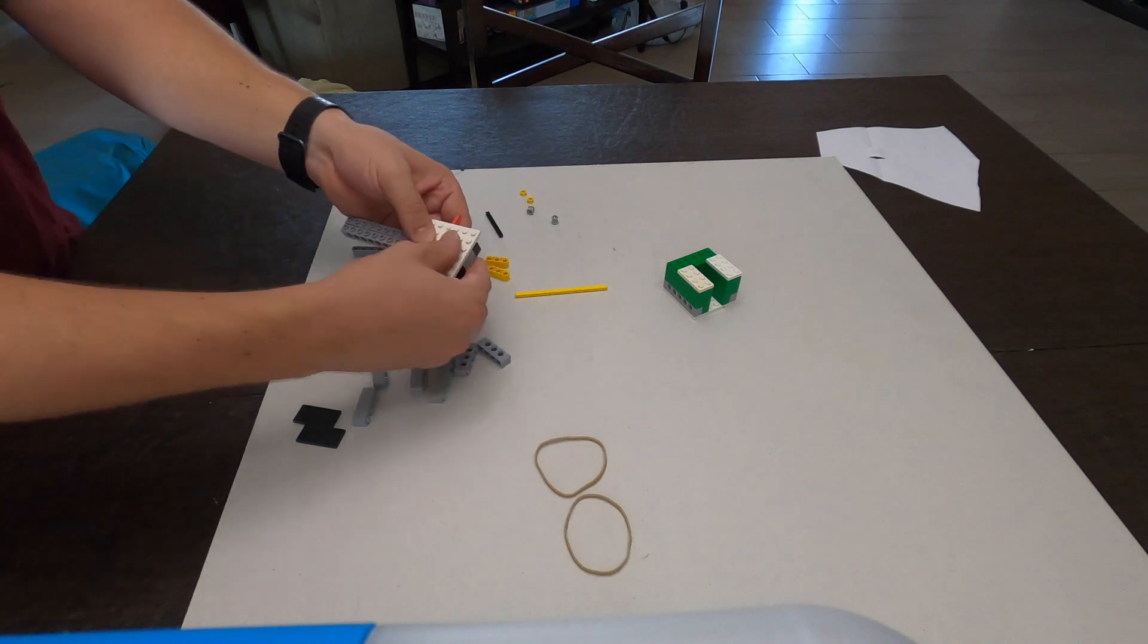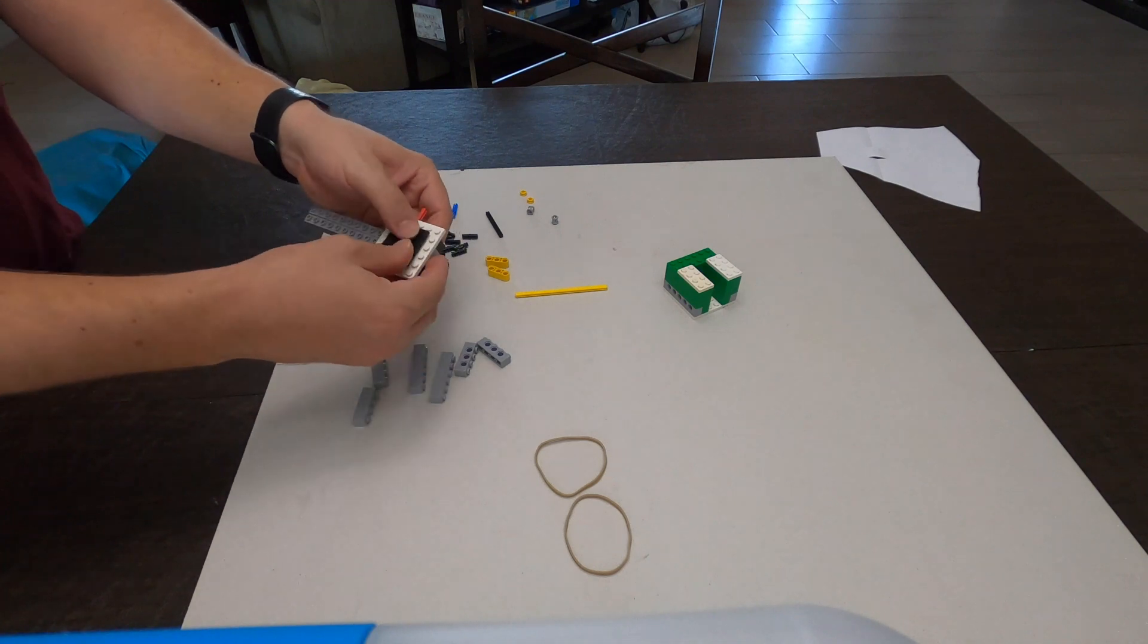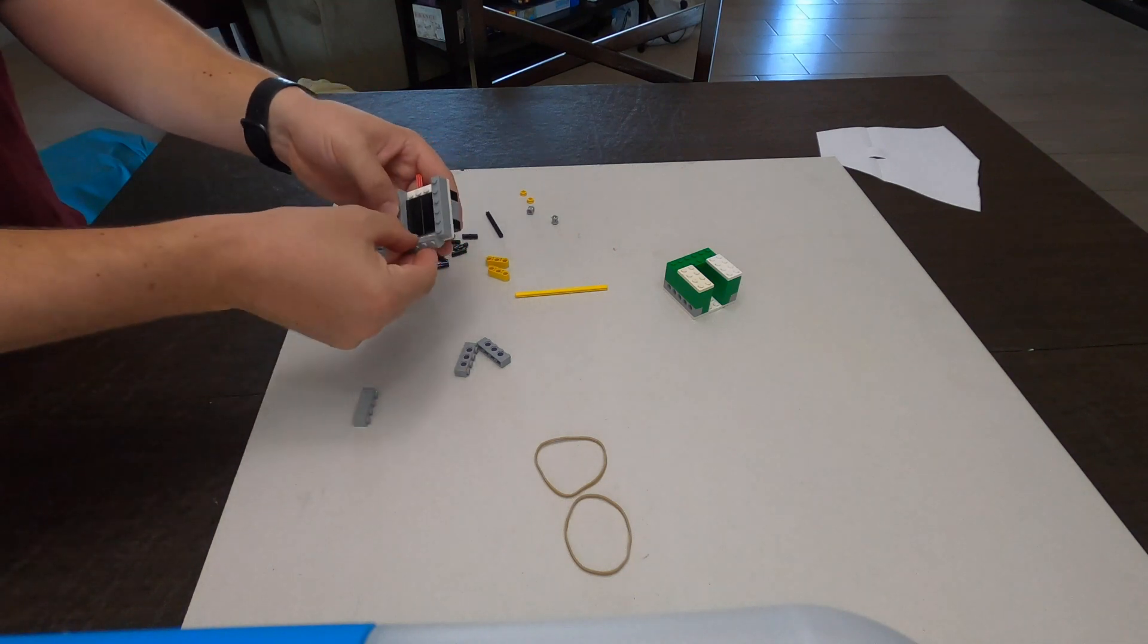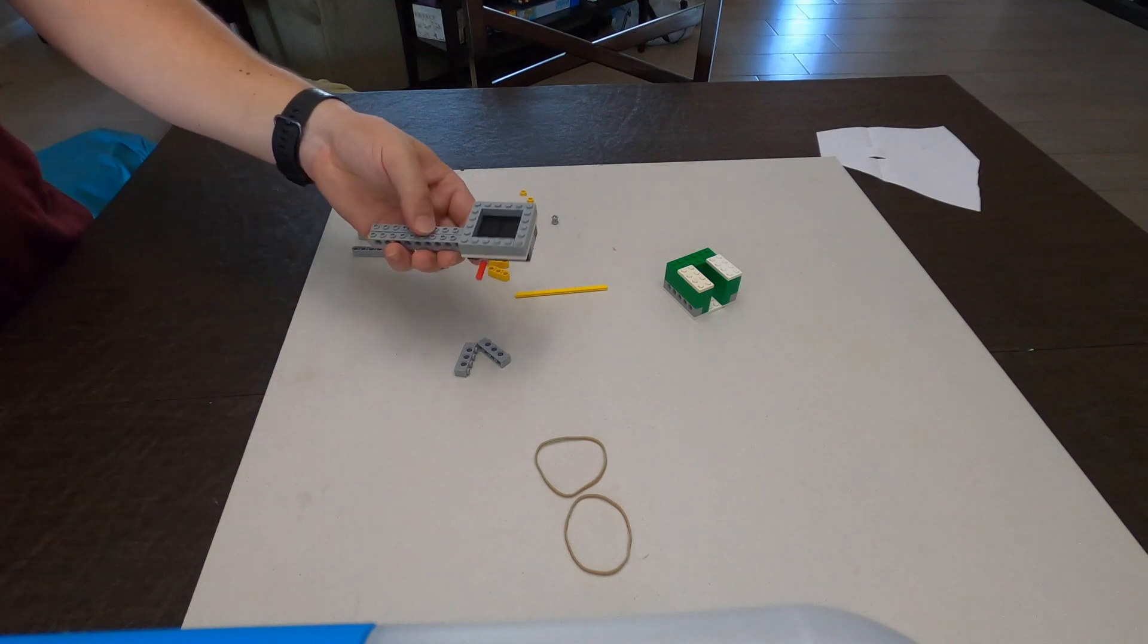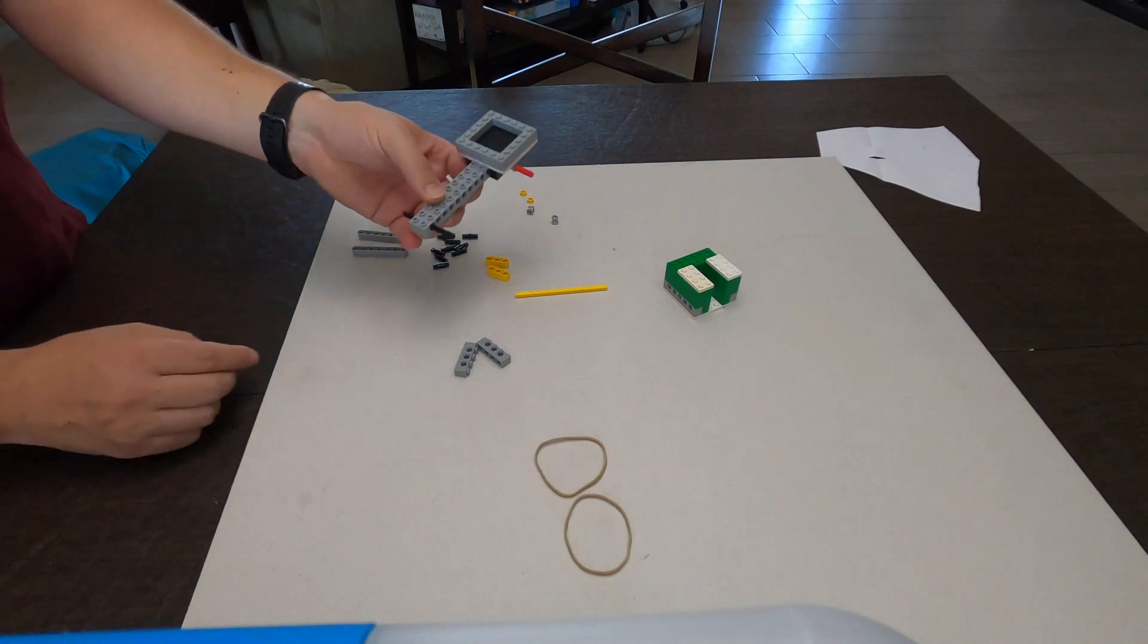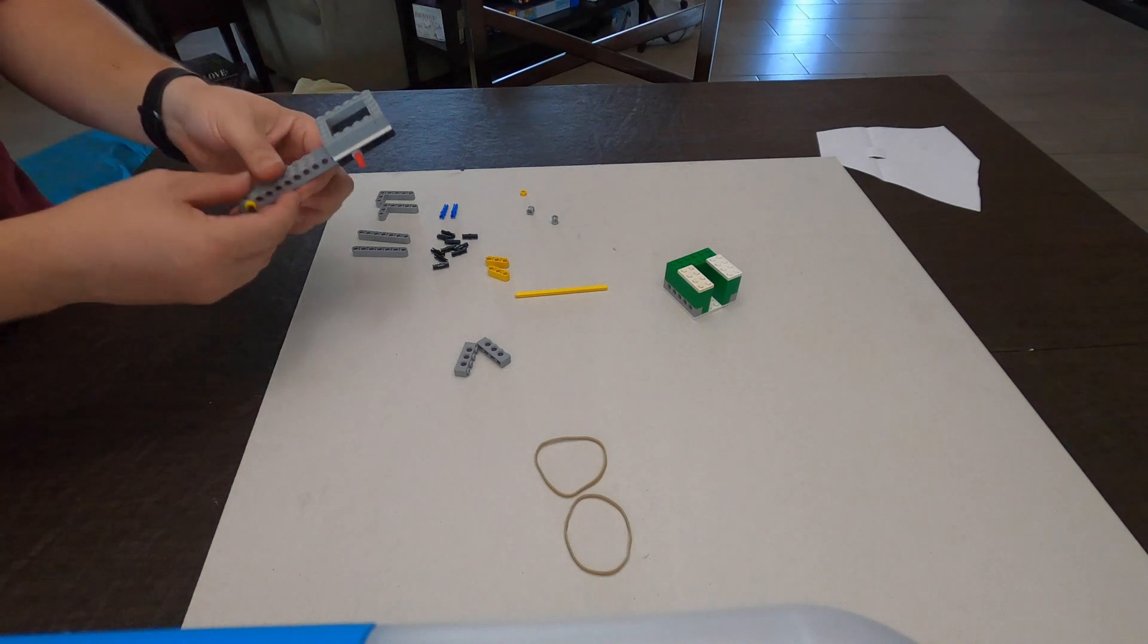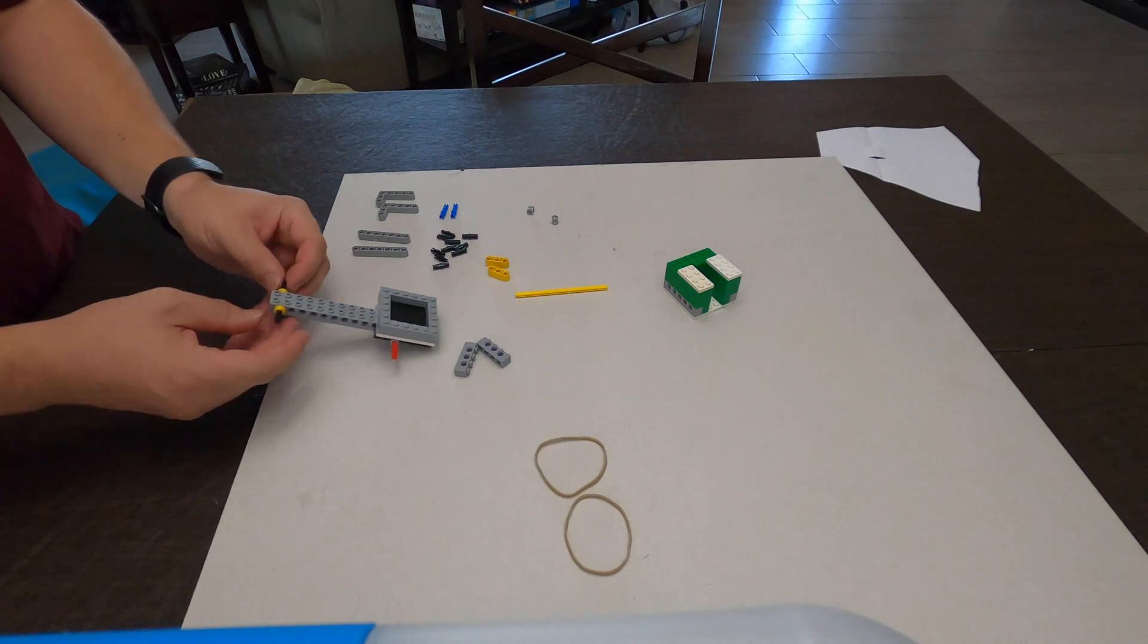Next step we're going to take our base plate, put that on top, and then take our smooth tiles and place those in the middle. Build a little wall around those smooth tiles. Then we're going to take our axle that is six long and we're going to put that through this last hole and then we're going to use the smaller one-third bushes to keep this in place.